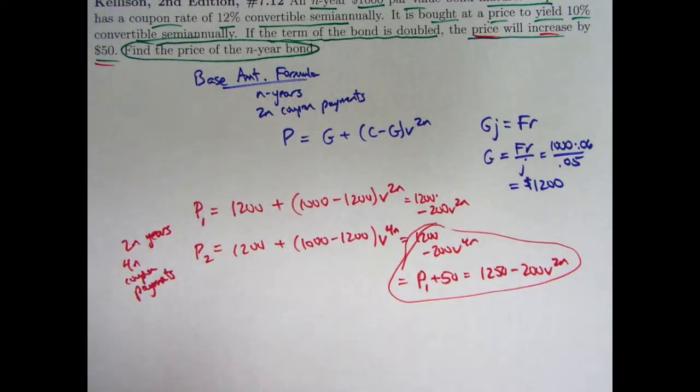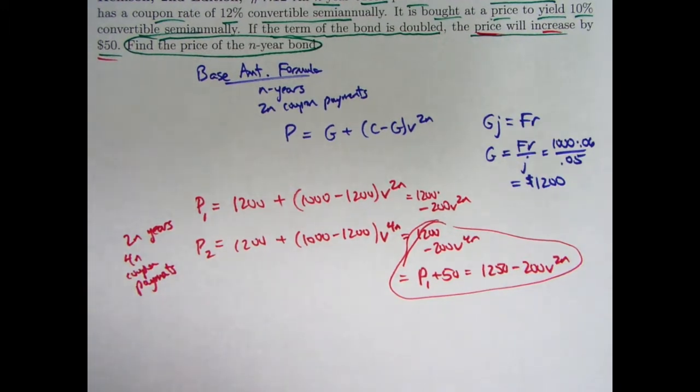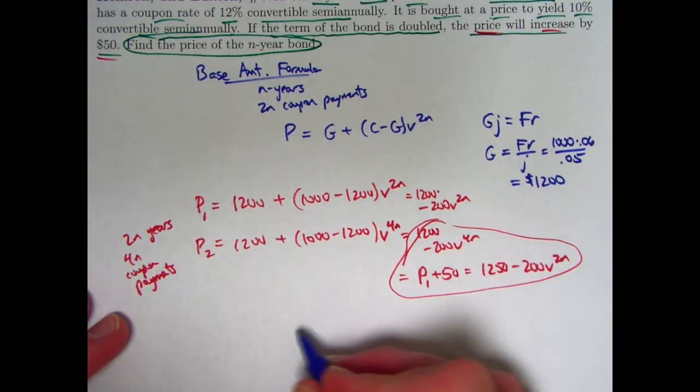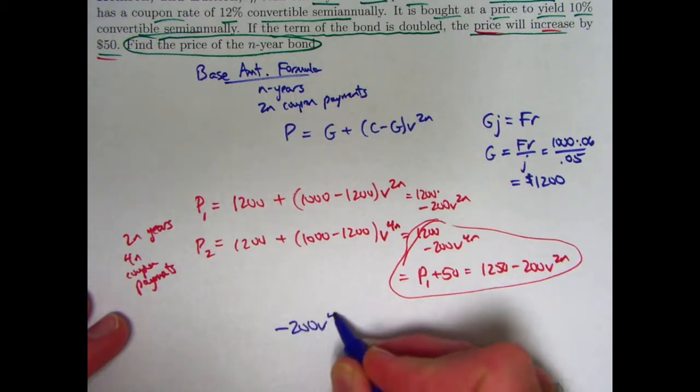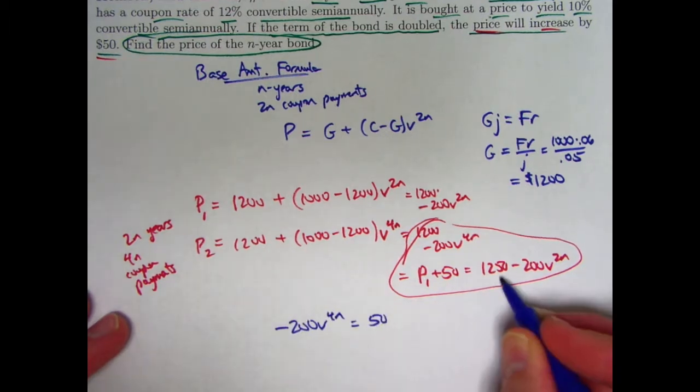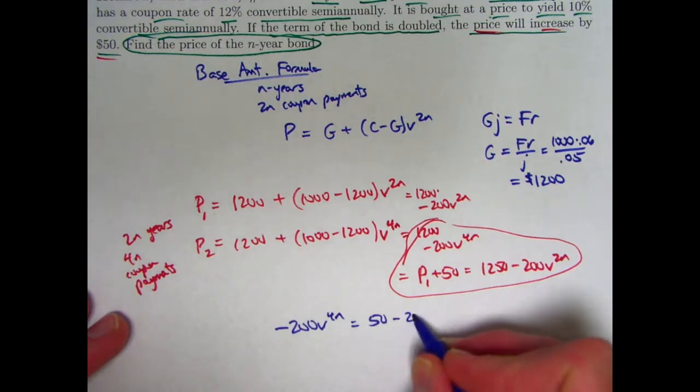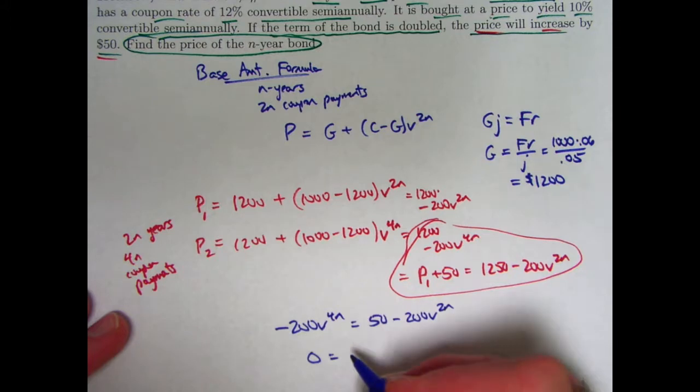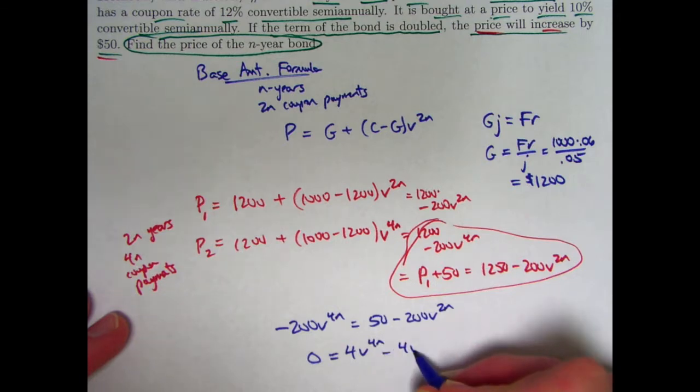That gives us really a quadratic equation in the quantity v to the 2n that we can either factor or use the quadratic formula for to solve. Simplifying a bit, this 1,200 here can cancel completely. We can write negative 200 v to the 4n equals 50, subtracting 1,200 there, minus 200 v to the 2n. Let's get everything on the right side and divide everything by 50. This 200 divided by 50 is going to be 4. We'll have a 4 v to the 4n minus 4 v to the 2n. And then 50 divided by 50 is plus 1.